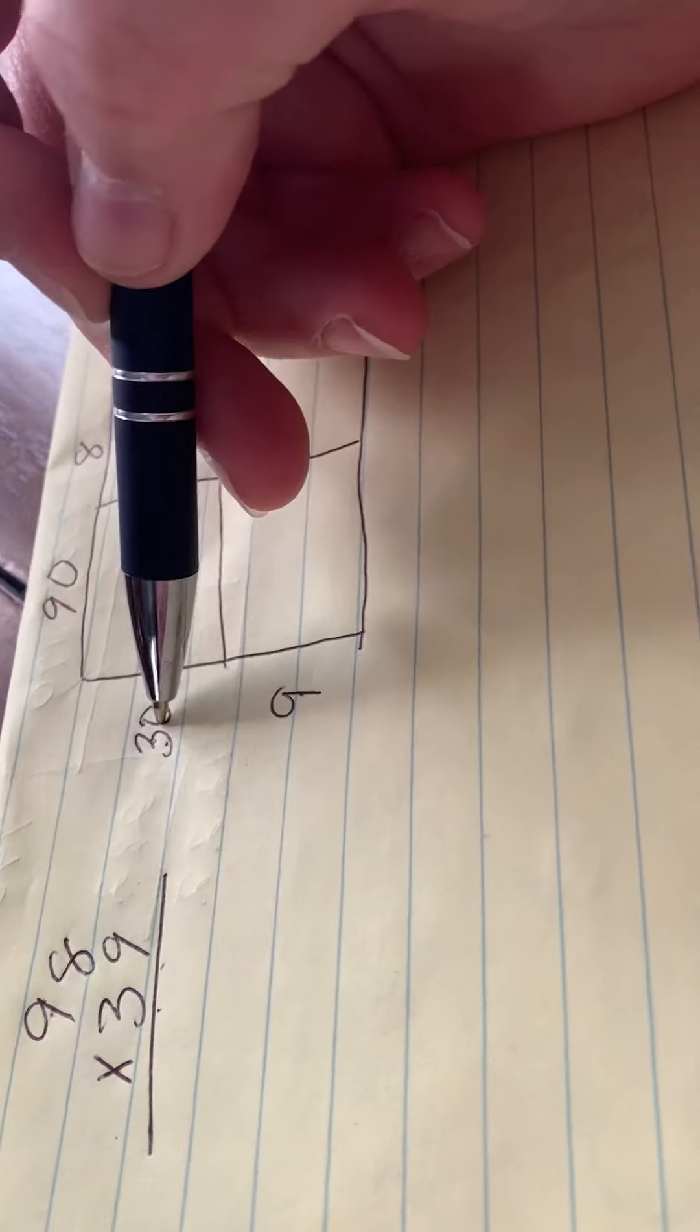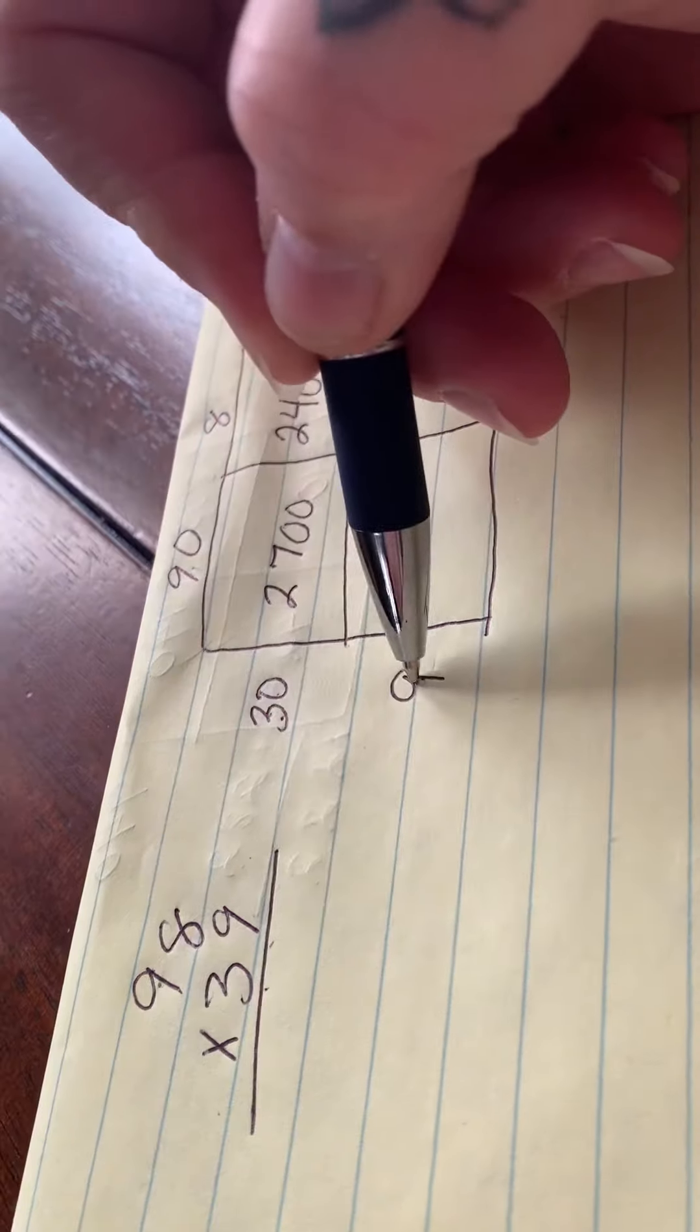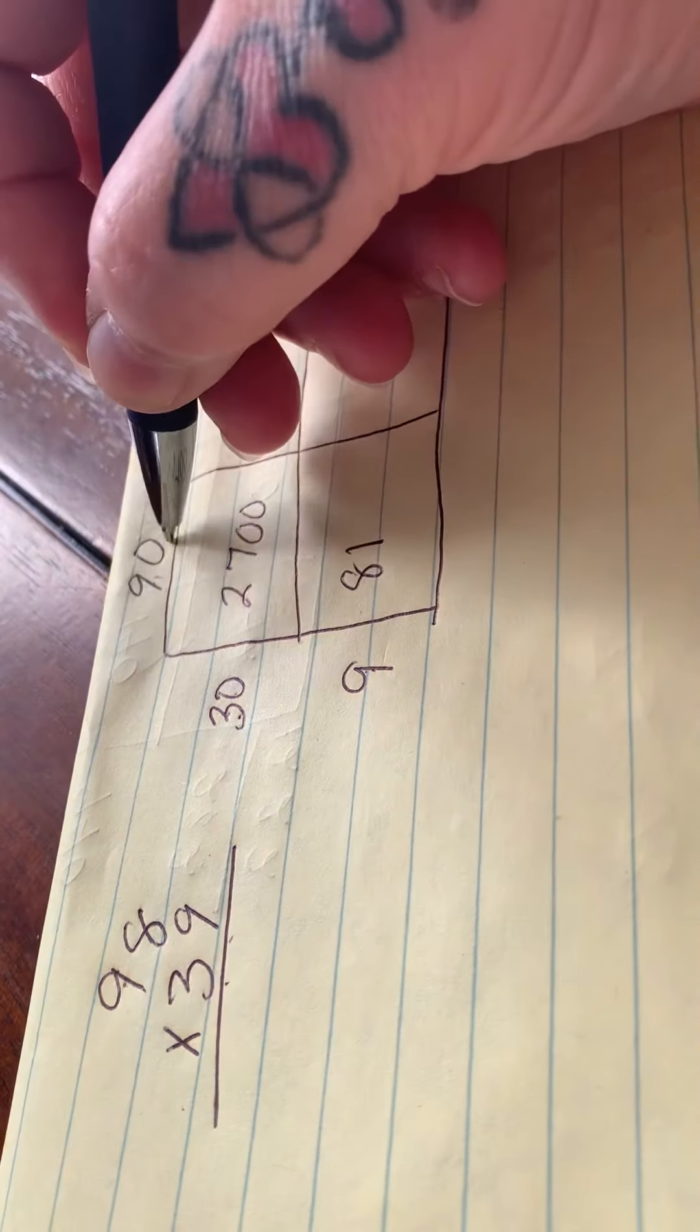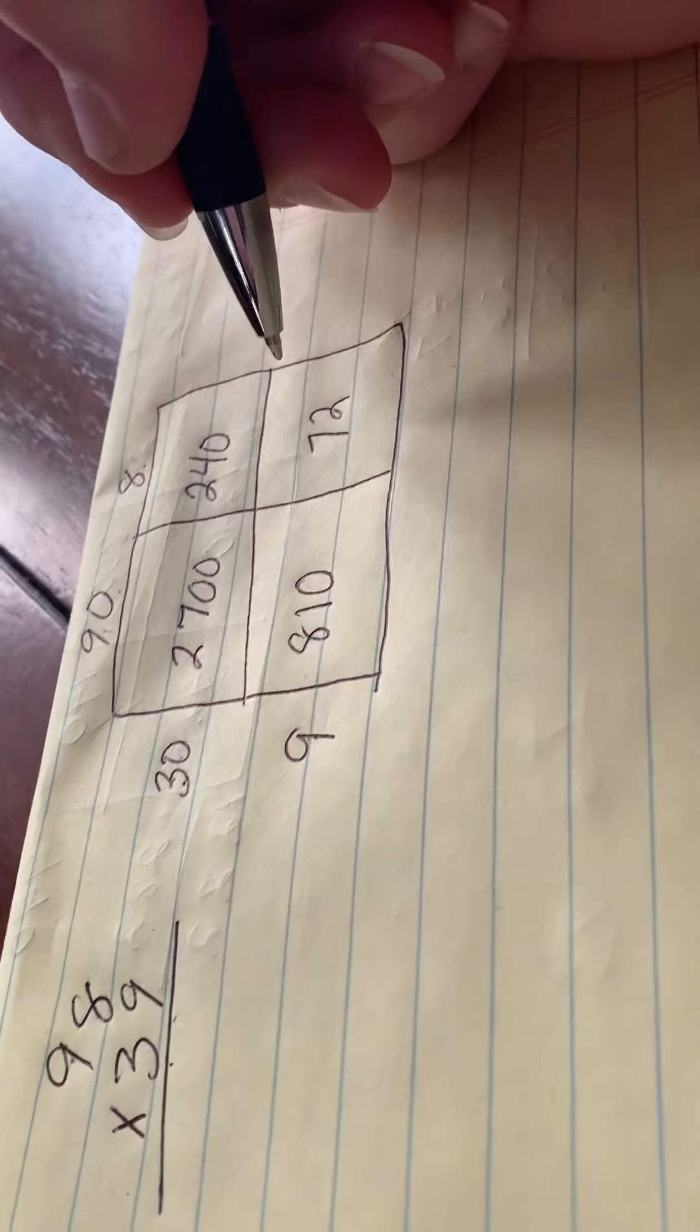And then I have one zero. 9 times 9 is 81, and there's my zero. And 8 times 9 is 72.